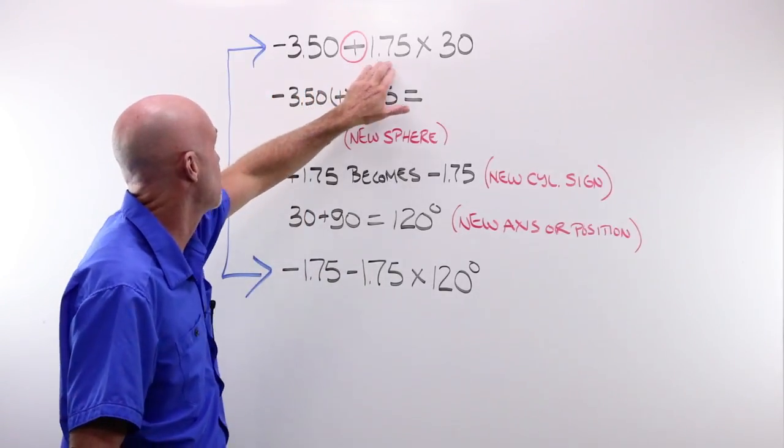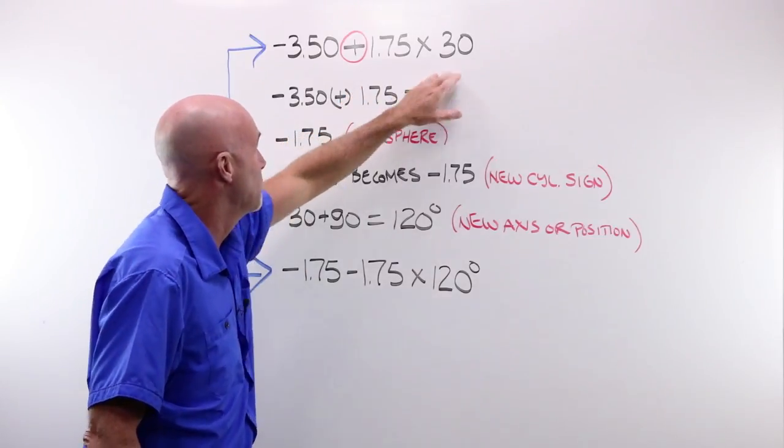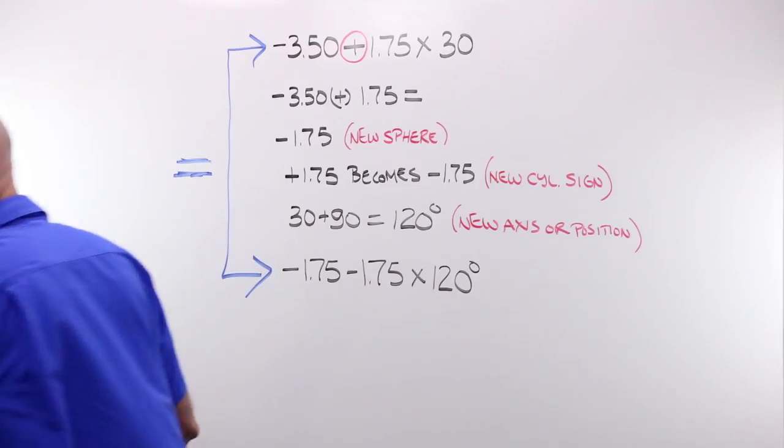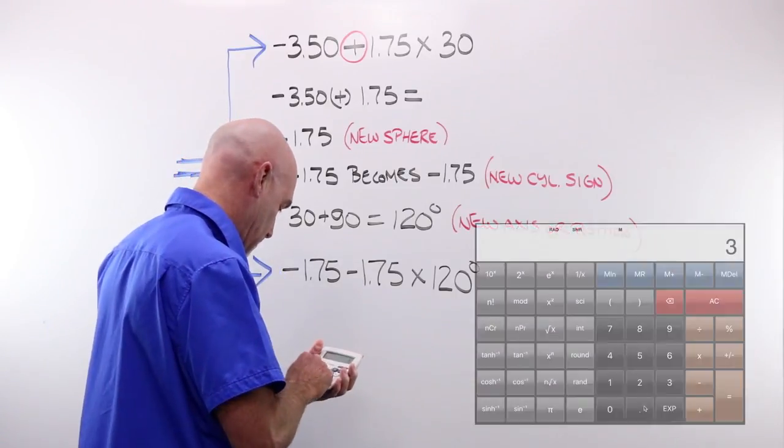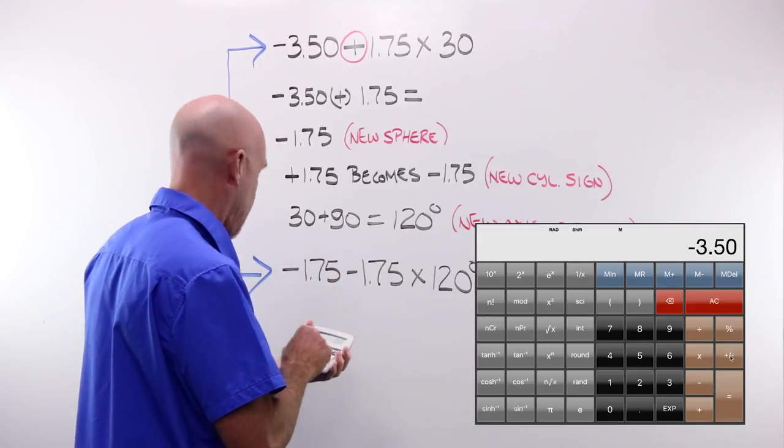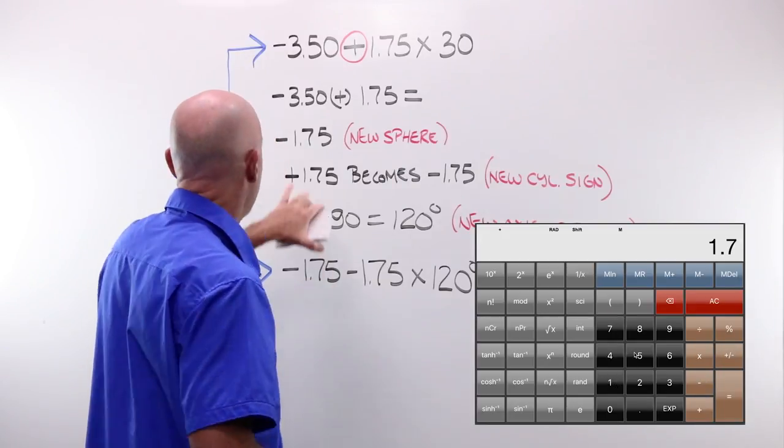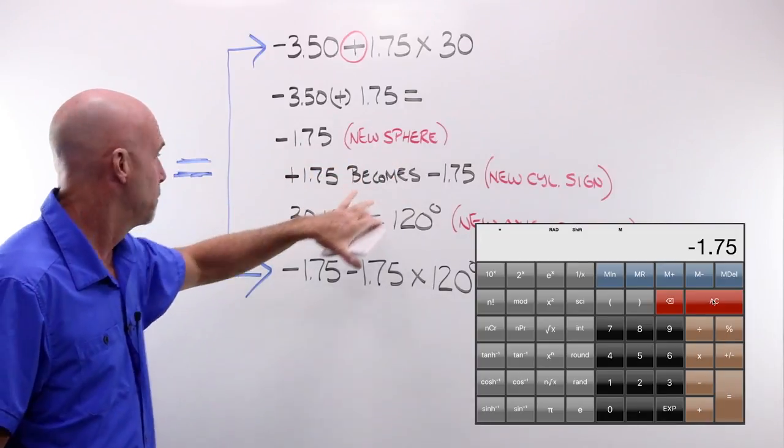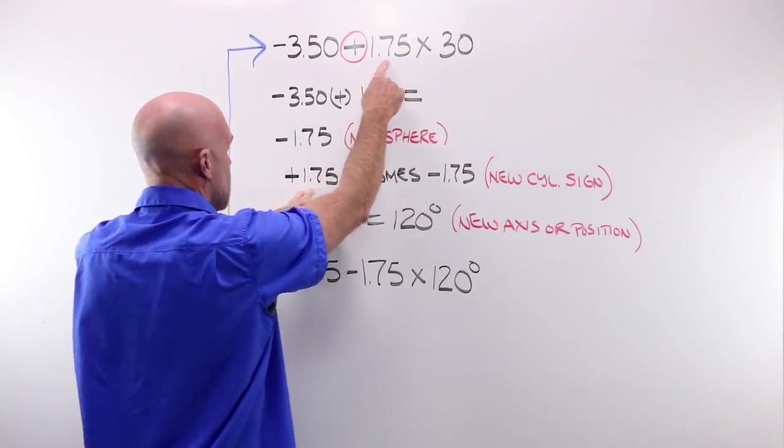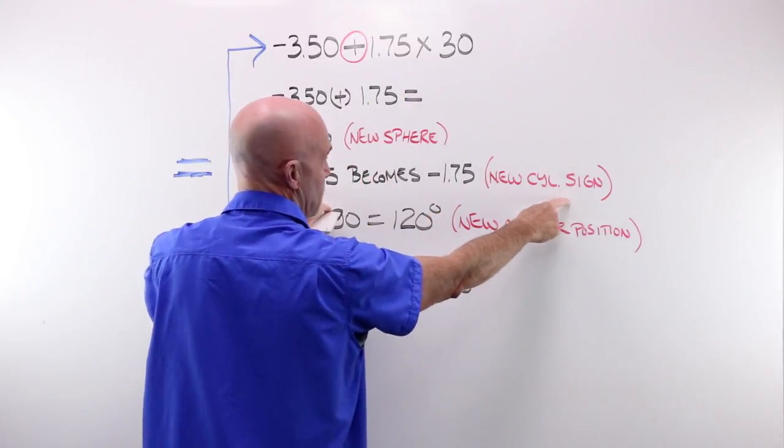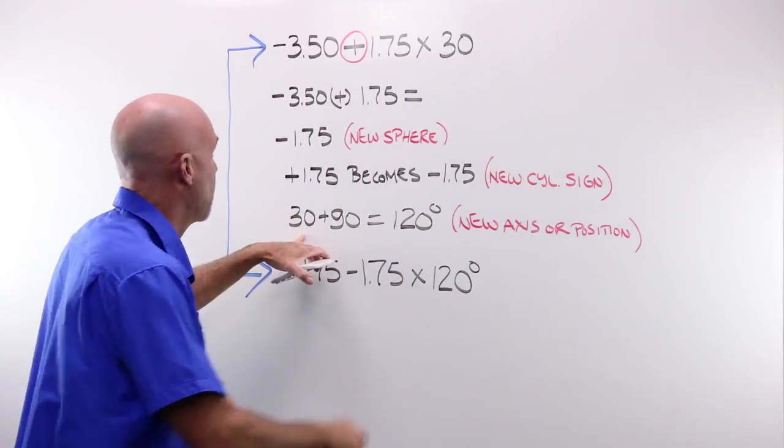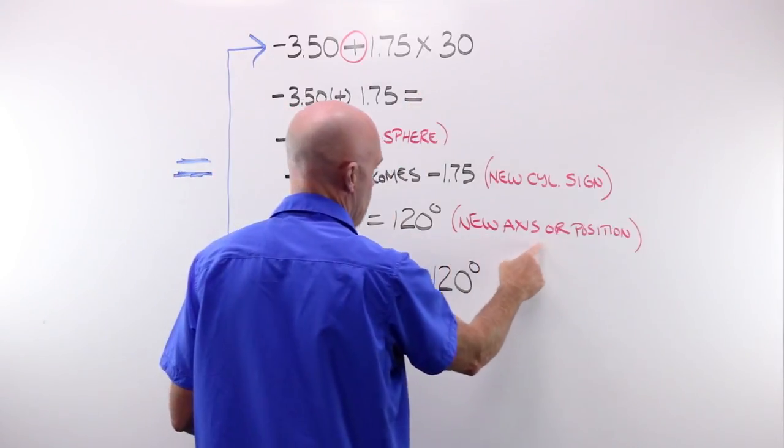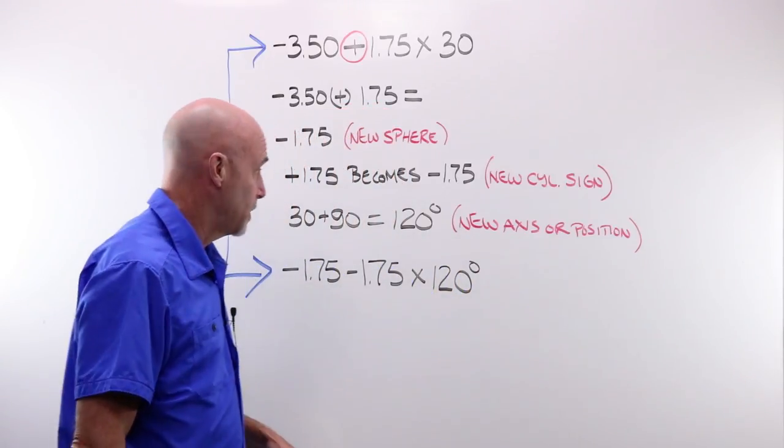If I had a minus 3.50 plus 1.75 at 30, I would do the exact same thing. I would take my calculator, and I would take my minus 3.50, and add 1.75. I end up at minus 1.75, that is my new sphere value. My plus 1.75 becomes minus 1.75, my new cylinder sign. My 30, I need to move my axis by 90 degrees. I end up at 120 degrees for my new axis or new position. In other words, where I am writing these lens powers from.